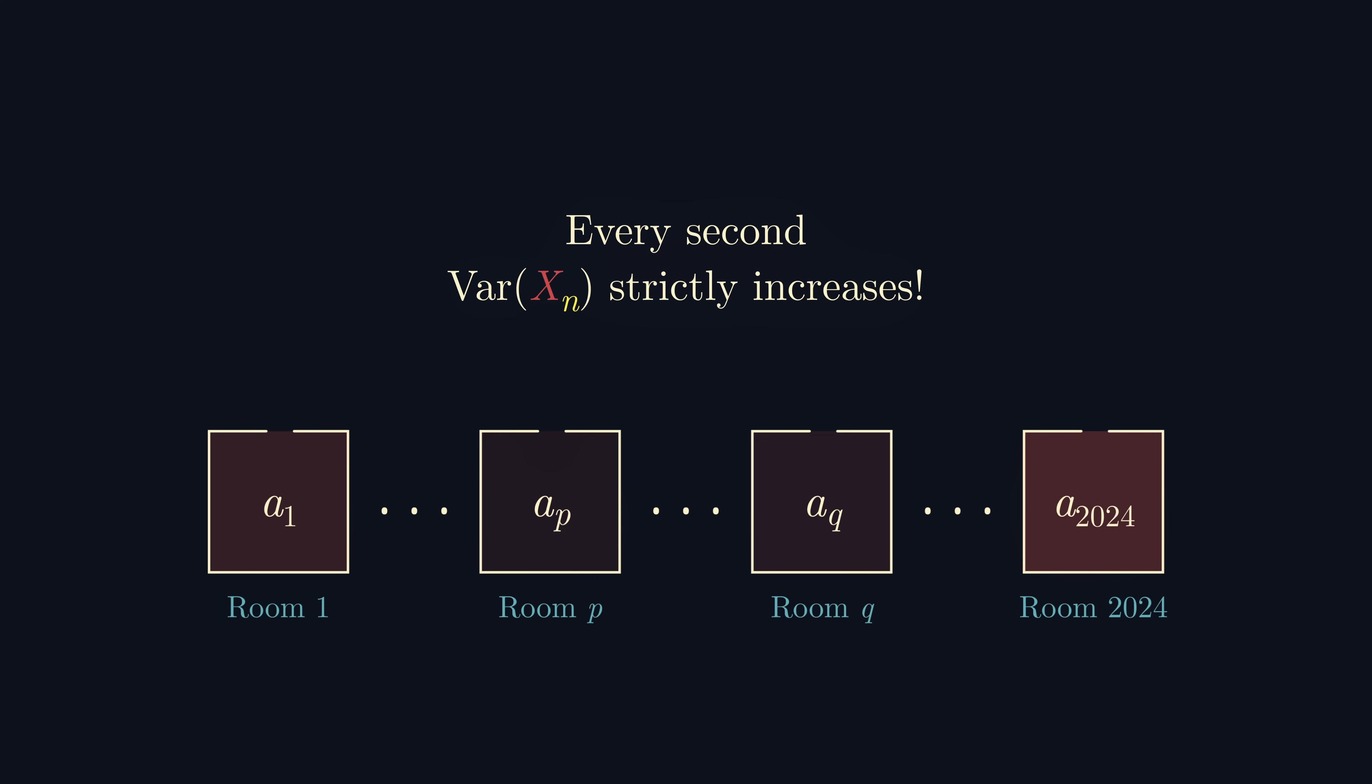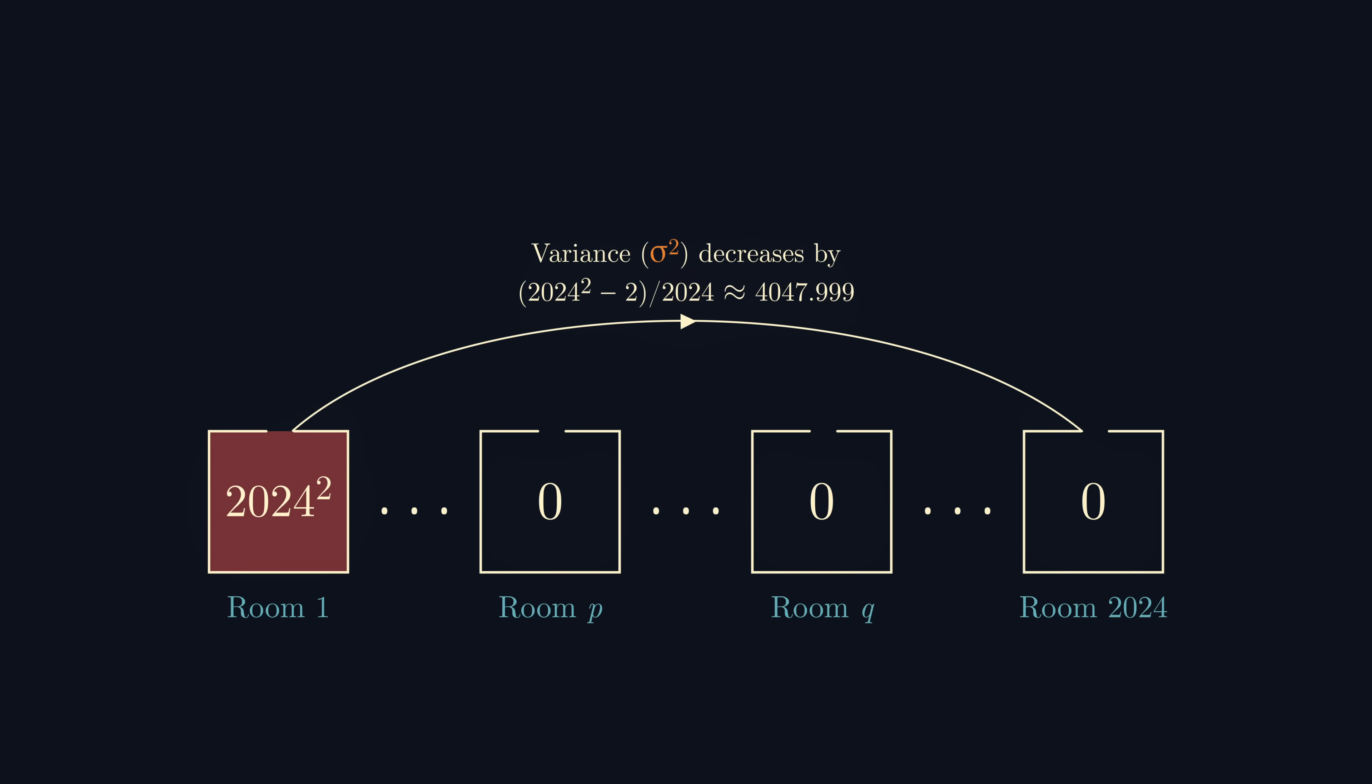That is to say that every second the variance in the number of insects in each room always increases. But when is the variance maximal? Well, if all the insects are in one room, then any movement of an insect will cause the variance to decrease. But we know that at each stage the variance must increase, so this configuration must be the one that we reach at the end. And we're done.